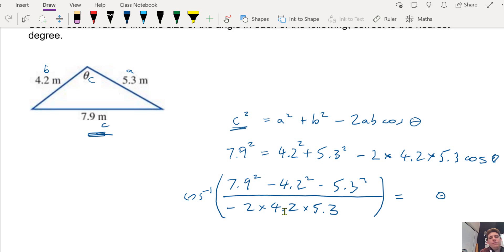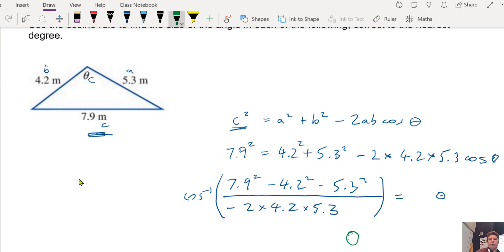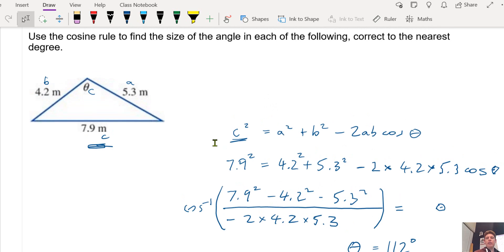Okay, and then we have to type all of that into our calculator. And I get 112. So the unknown angle is 112. It says correct to the nearest degree, so we just write it as that.